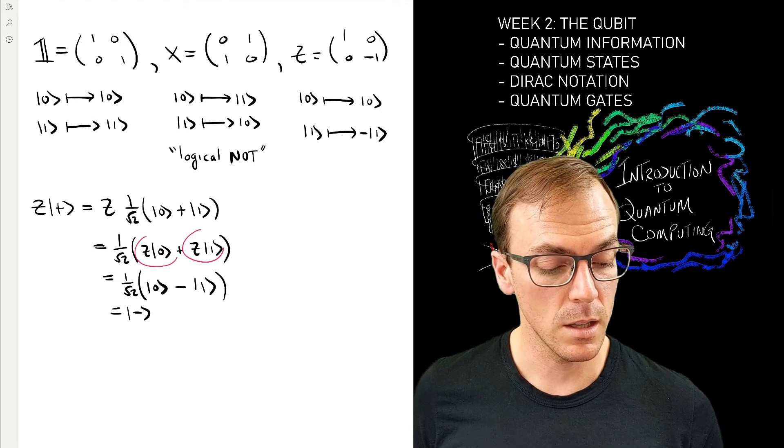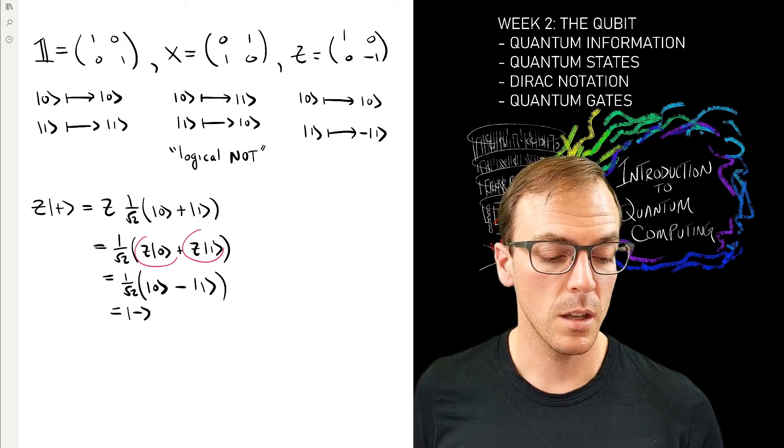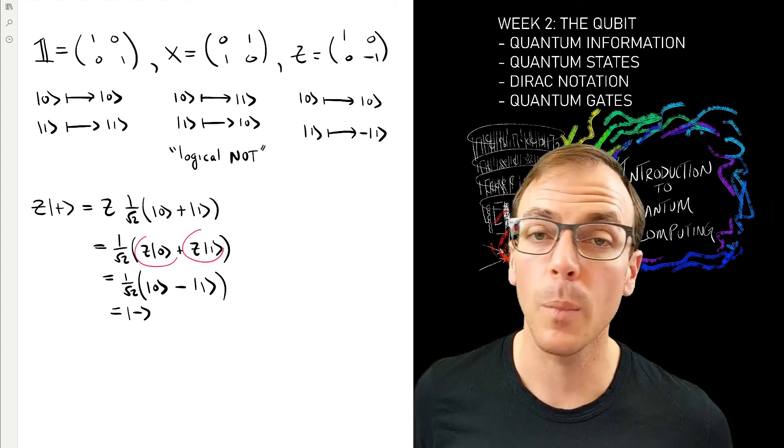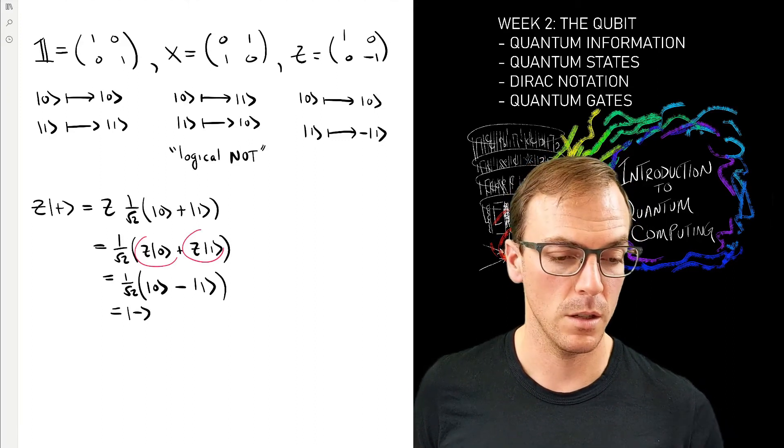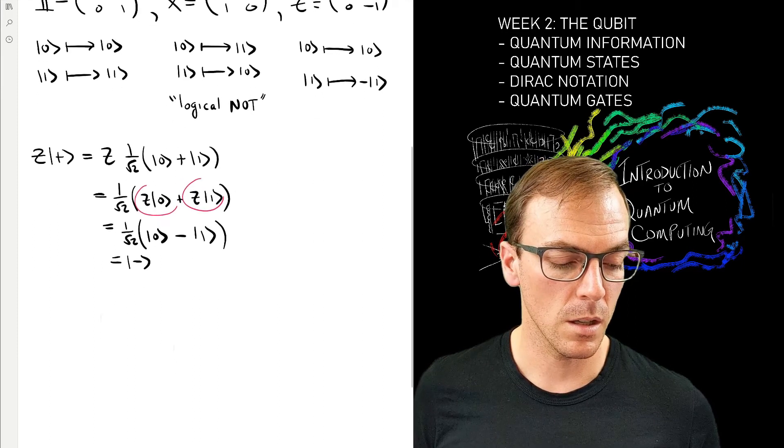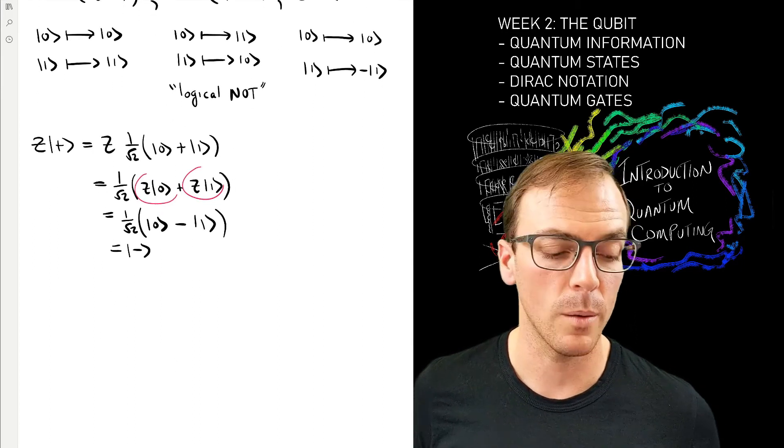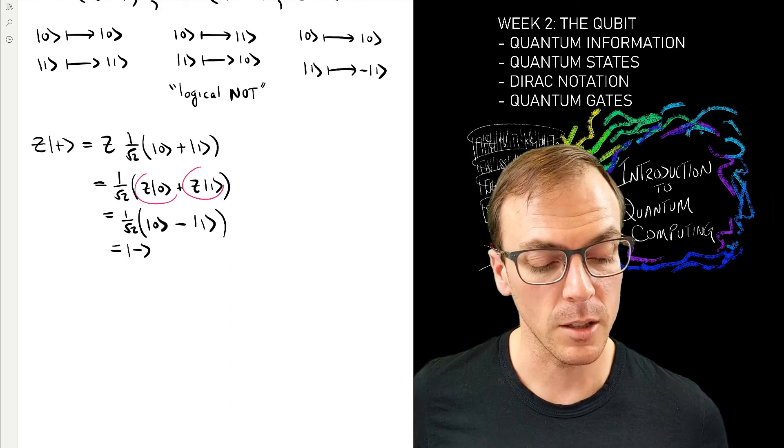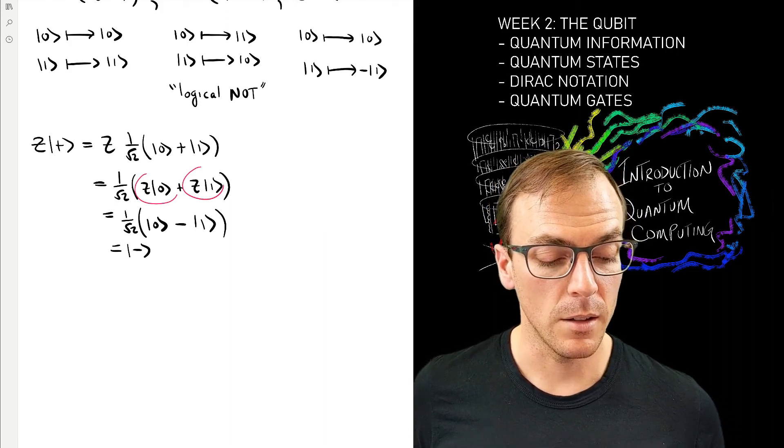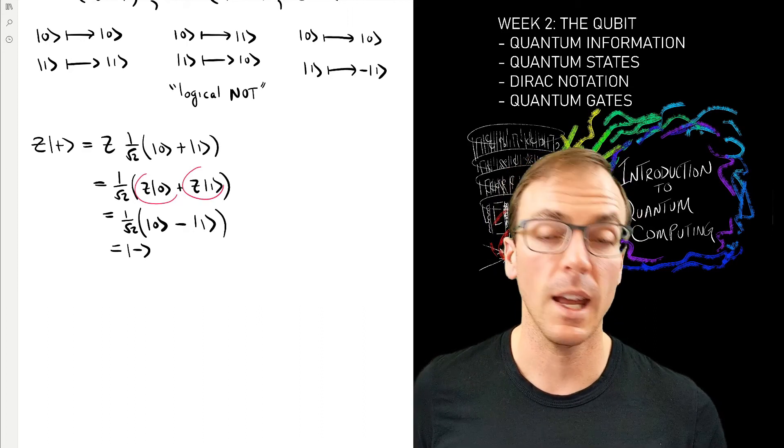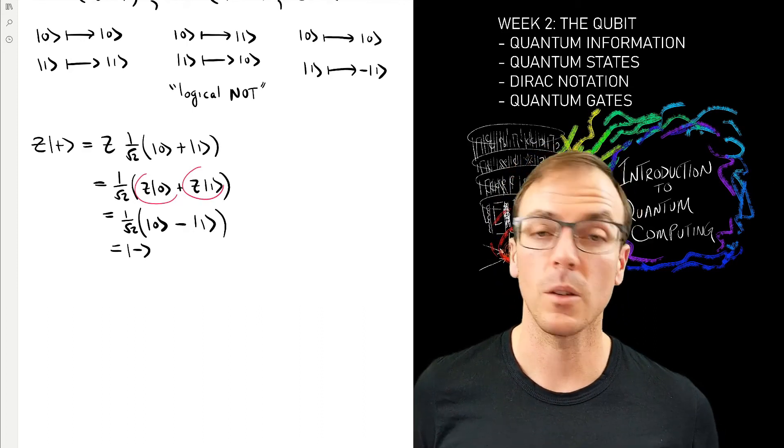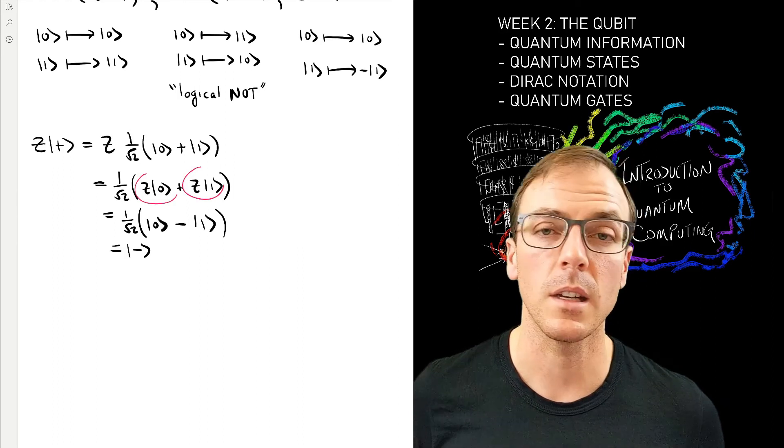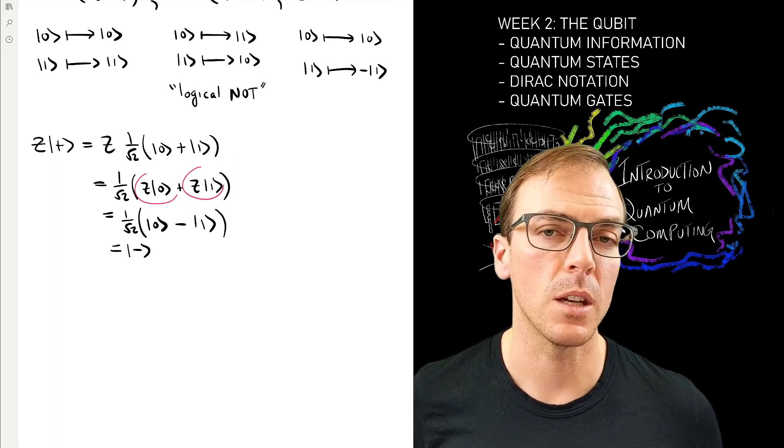What you can see here is that it's changed this coefficient—originally both had the same coefficient, and now they have opposite coefficients. This is a special case of a phenomenon called interference. You can imagine that once I do a more complicated computation, these minuses are going to start to cancel with some of the pluses, and terms are going to disappear. This interference phenomenon is sometimes suggested as where quantum computation gets its power from.